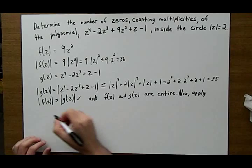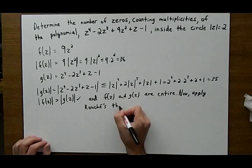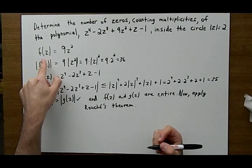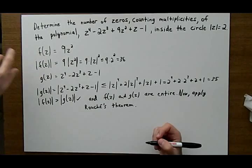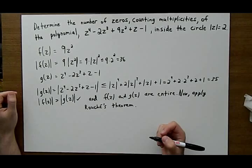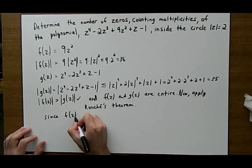And what Rouché's theorem says is that the number of roots or number of zeros for f of z will be equal to the number of roots or zeros for f of z plus g of z. So that means since f of z has two zeros, then f of z plus g of z also has two zeros.